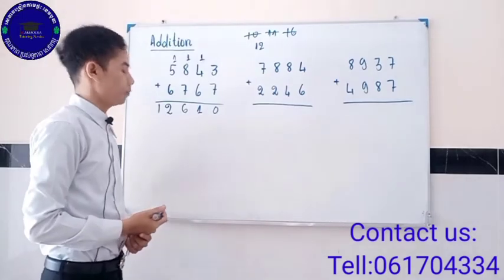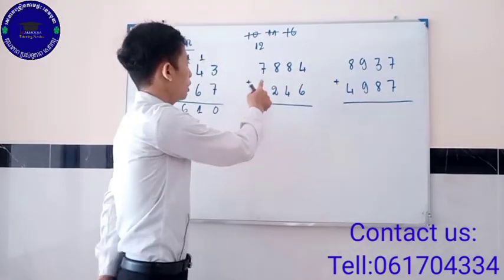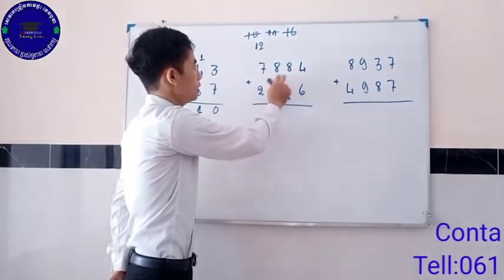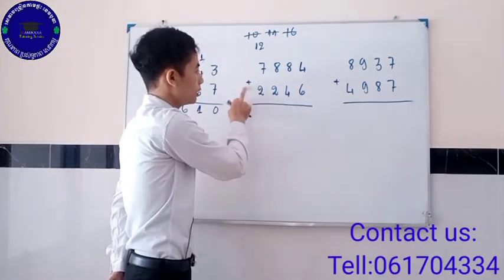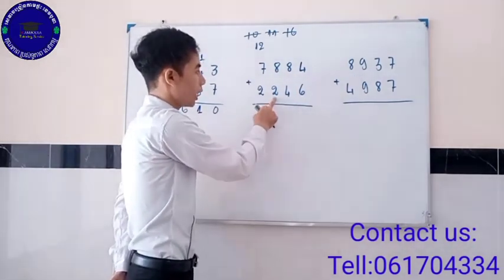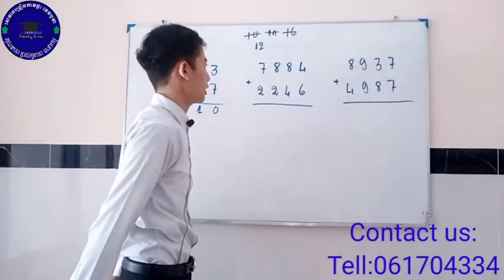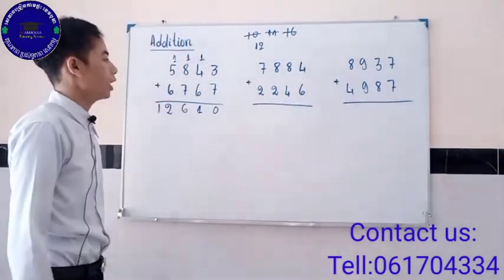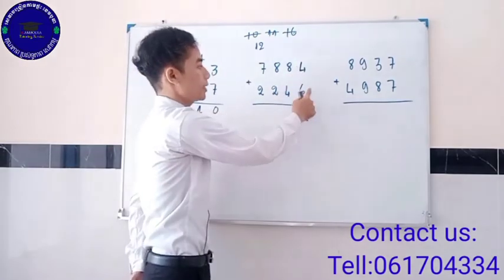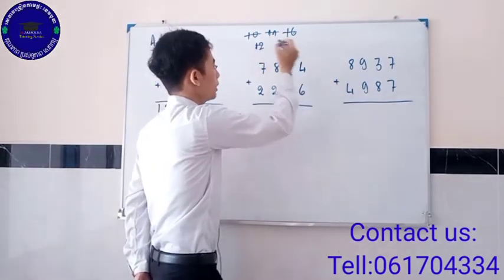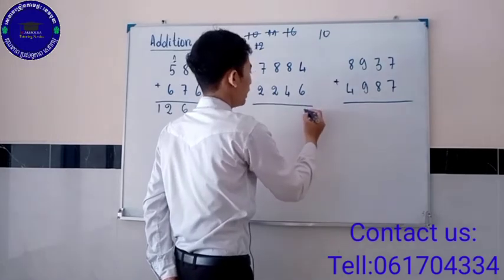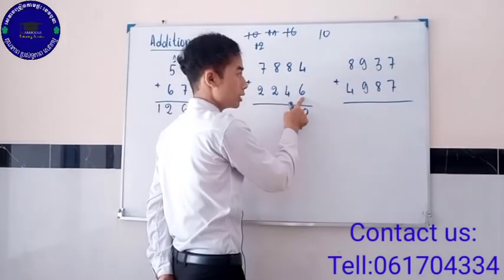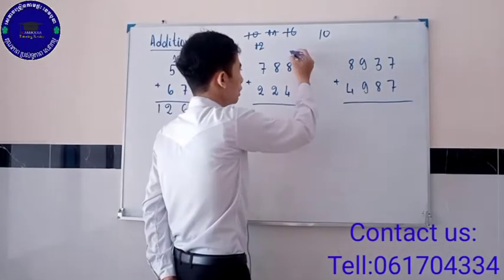Next exercise. So when 1,884 plus 2,246. First, when we add 4 and 6, we get 10. And we write 0 under 6 and carry the 1 above 8.